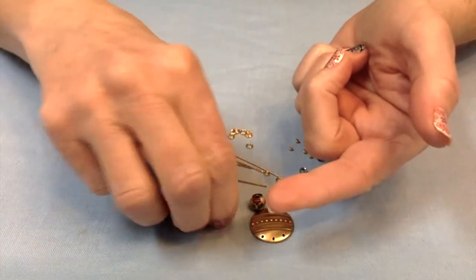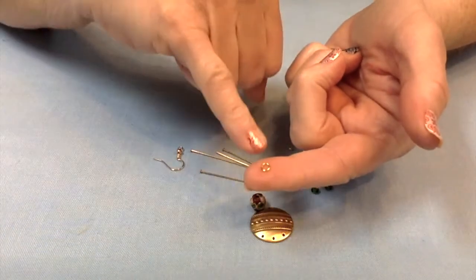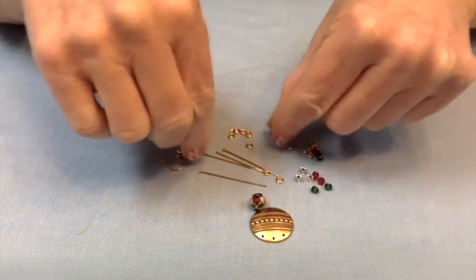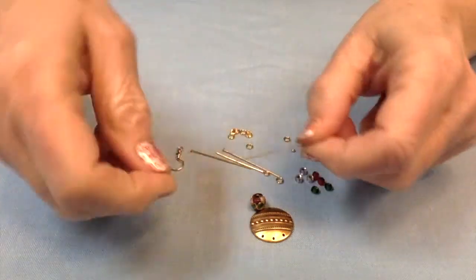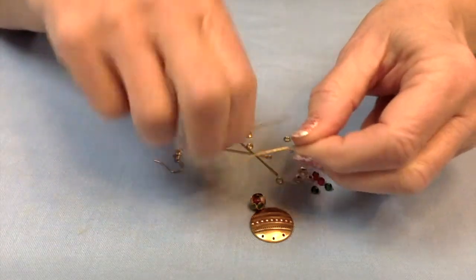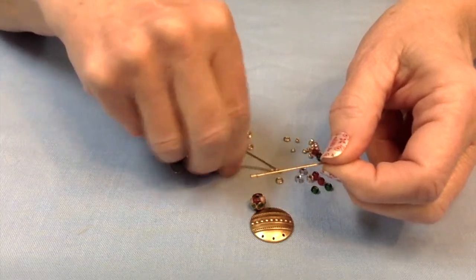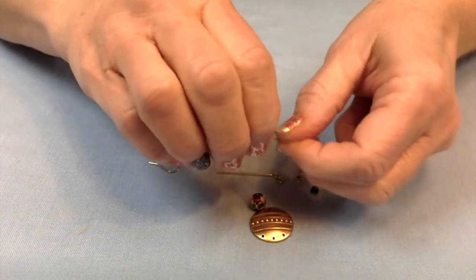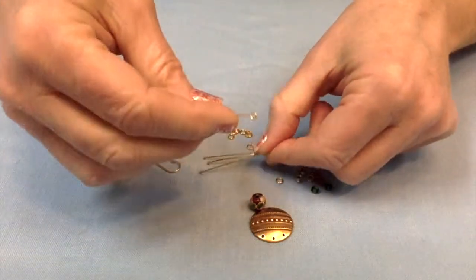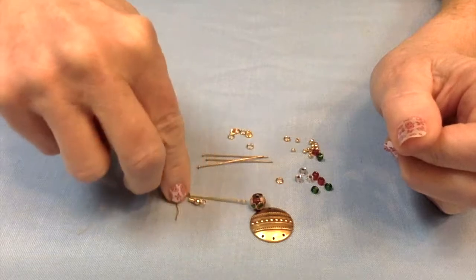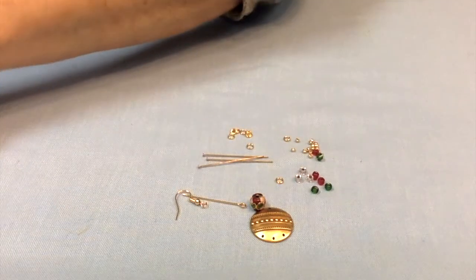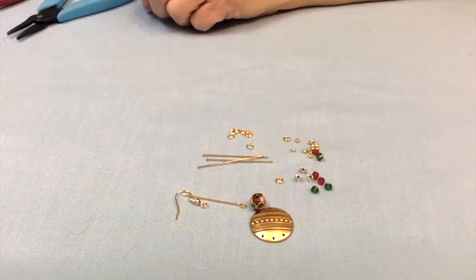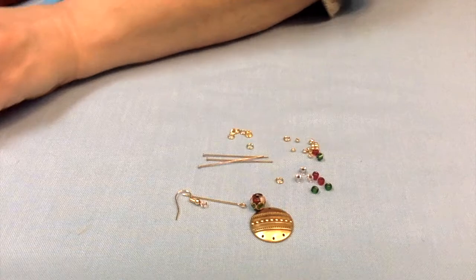I'm going to need these little bitty jump rings and then I'm using some, I need three head pins and one eye pin and of course I need an ear wire. And then I need round nose pliers, wire cutters, flat nose pliers.